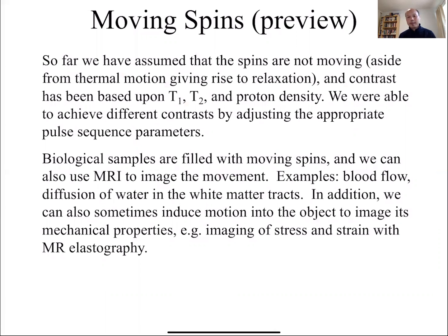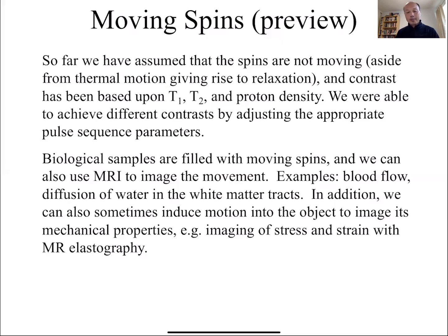We're going to switch gears and talk about moving spins. So far we've assumed we're looking at a static picture, or spins where we focused on their contrast — for fMRI it was the T2 star contrast. For the next two topics, diffusion and phase contrast angiography, we're going to look at what happens when spins move, and how to take advantage of that to get more information about a biological sample, because most interesting biological samples have something that's moving, whether it be water, blood, or other types of fluids.